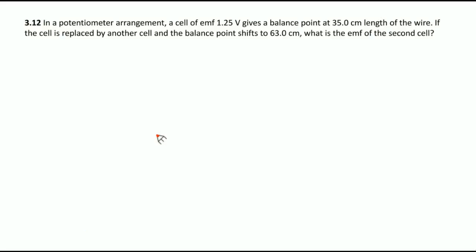In a potentiometer arrangement, a cell of EMF 1.25 volt gives a balance point at 35 centimeter length of wire. If cell is replaced by another cell and balance point shifts to 63 centimeter, what is EMF of second cell? E1 is given 1.25 volt and balance point is 35.